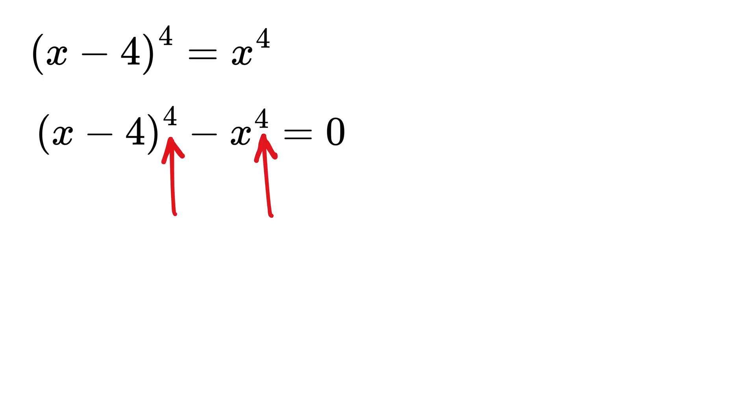Now we can use this power 4 to convert both of them into squares. This will become x minus 4 whole square and then bracket and again power 2 because 2 times 2 is power 4. Then this x to the 4 will become x square then bracket and then again raised to the power 2.